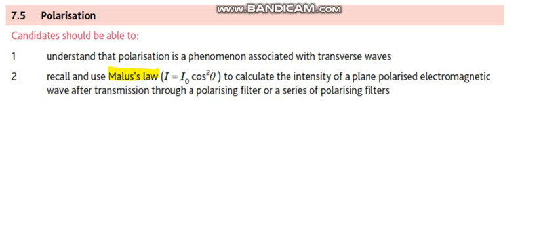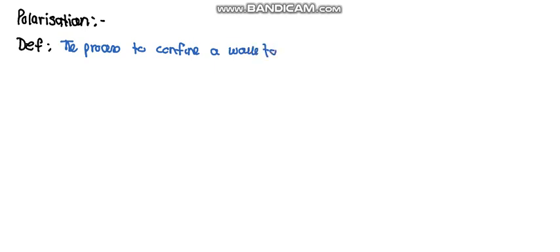So let's start. Polarization definition first. What is polarization? The process to confine a wave to pass through in one plane only is called polarization.